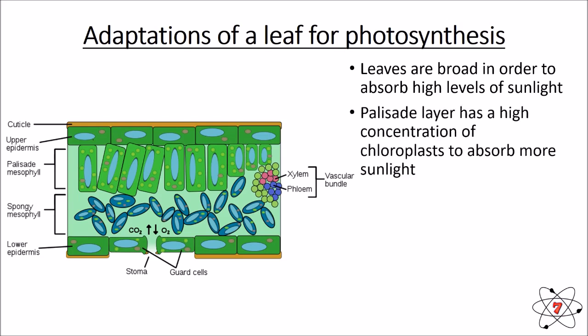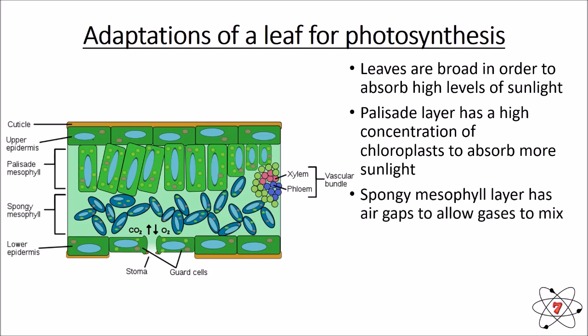The palisade layer contains most of the chloroplasts and is positioned close to the top of the leaf, meaning it receives lots of sunlight for photosynthesis. The spongy mesophyll layer below has lots of air gaps, which allows gases to mix — carbon dioxide from the atmosphere mixes with oxygen produced by the plant, and that carbon dioxide is then used in photosynthesis.